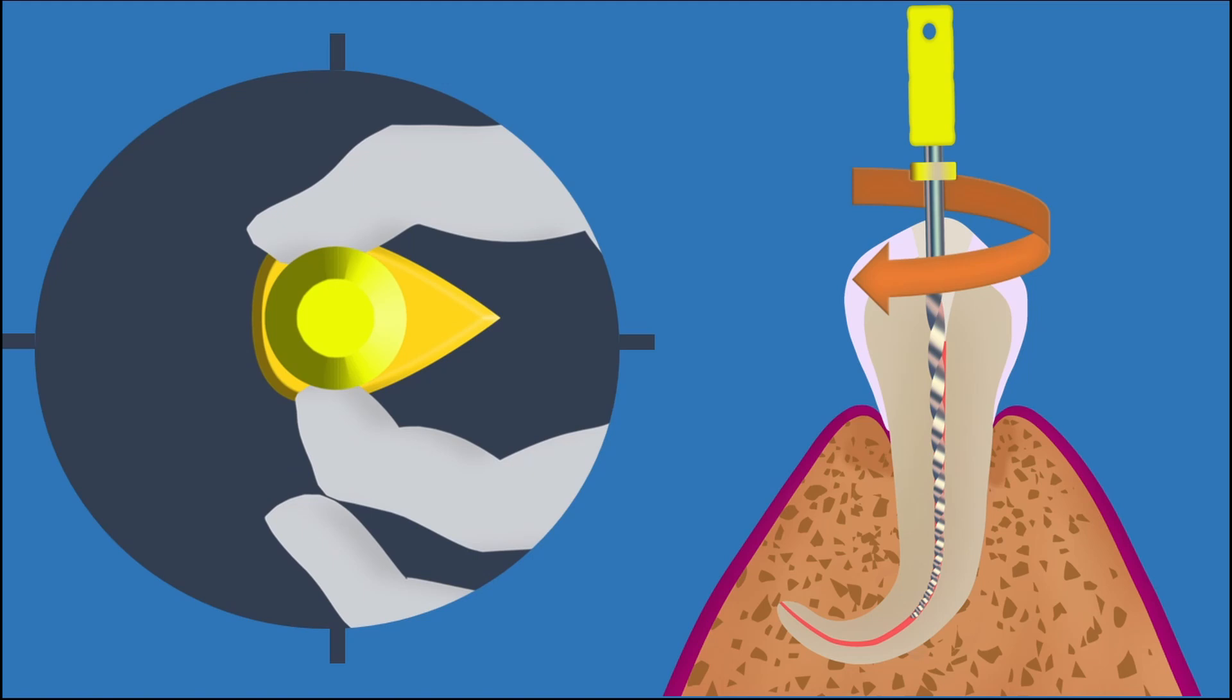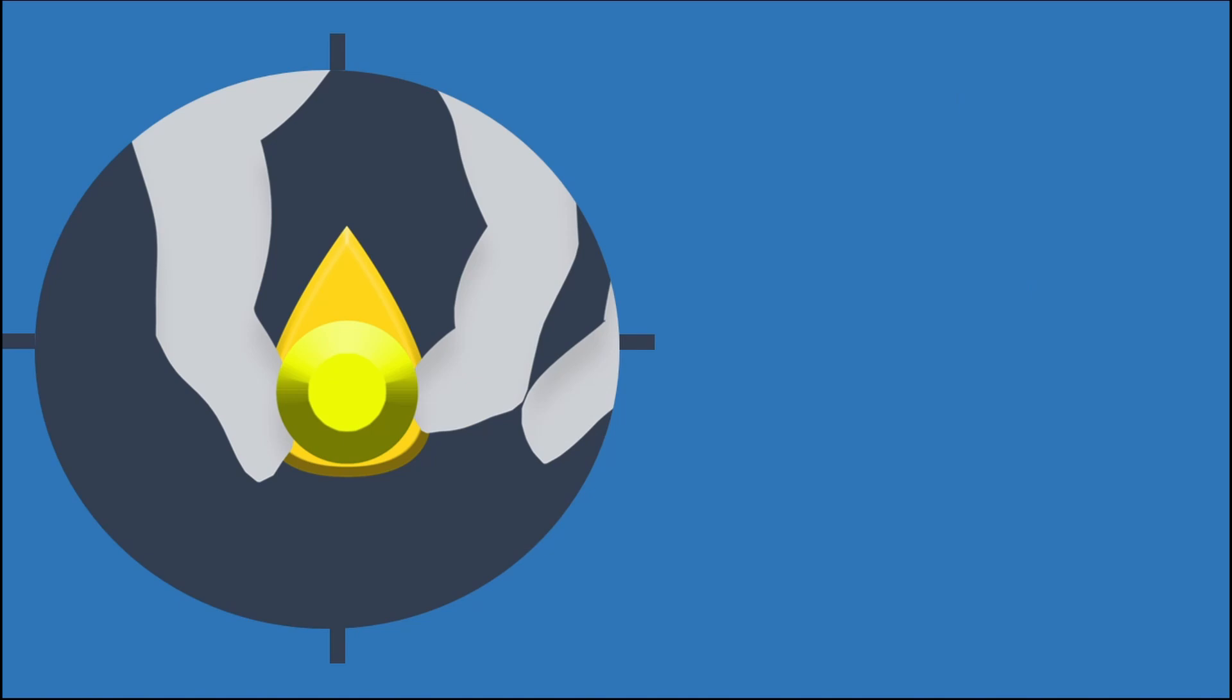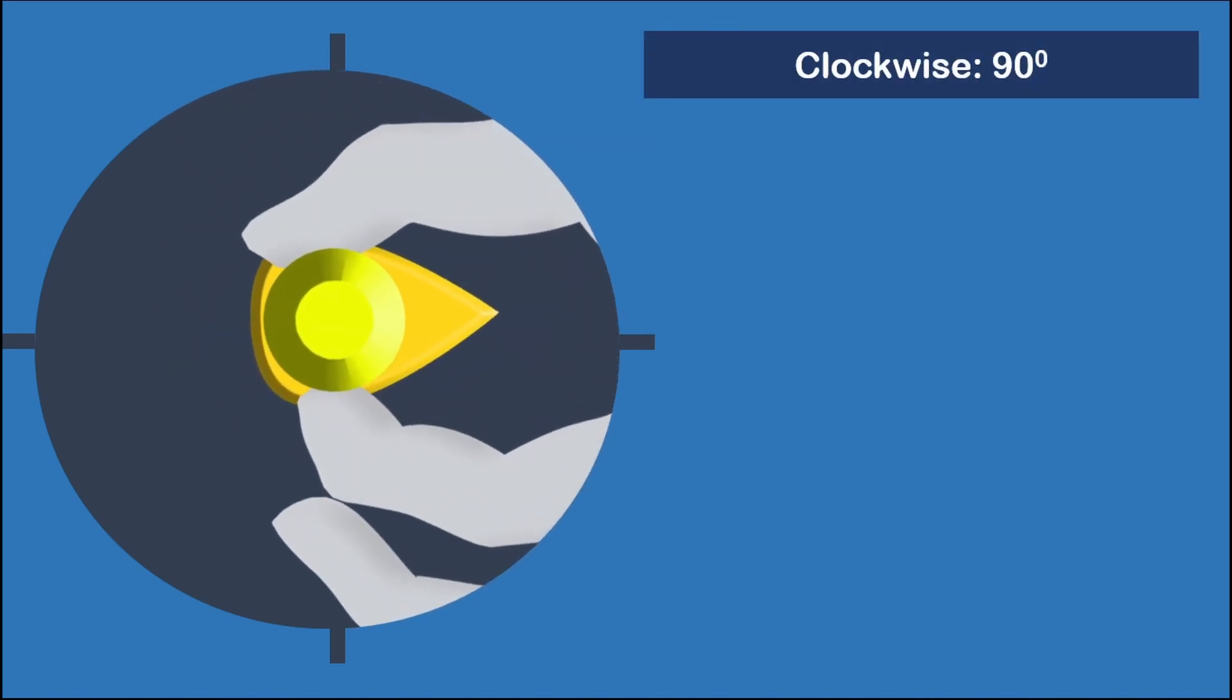Cleaning and shaping is performed with the following sequence. First step is the placement of the file with slight apical pressure at the same time rotating the file a quarter turn, that is 90 degrees clockwise. This process will allow the instrument to engage dentin, and this motion should not exceed 90 degrees.